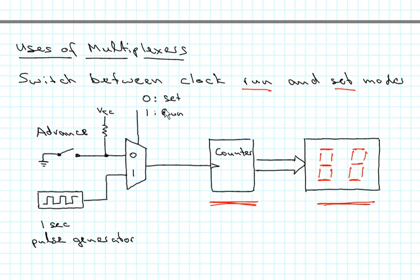So we would then go into the set mode up here by applying a 0 to the select input and then we can set the clock by using this manual switch here and advance the digits. This is just a simplified form, in reality this switch here needs to have some debouncing but this just shows schematically that we can do a manual advance.